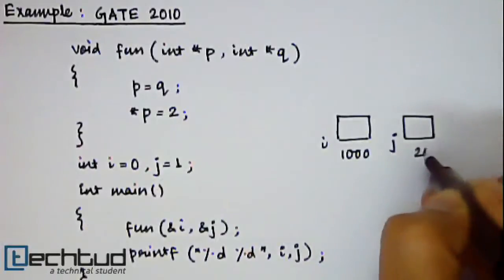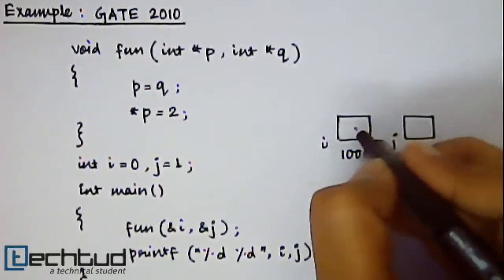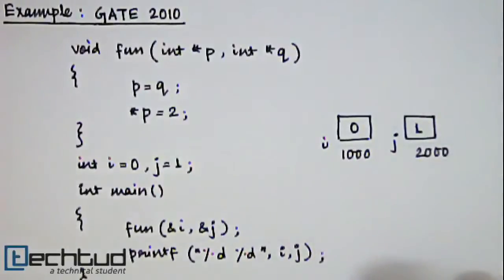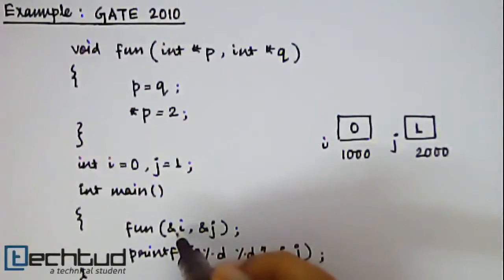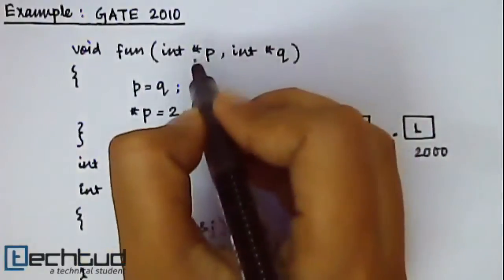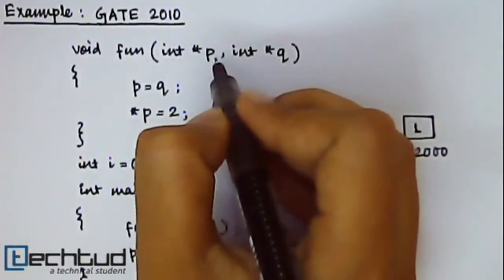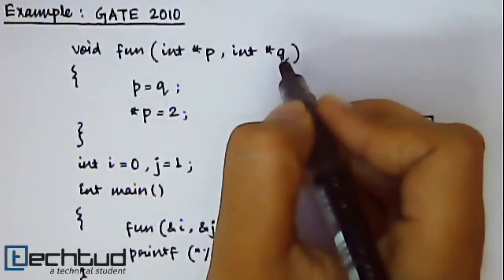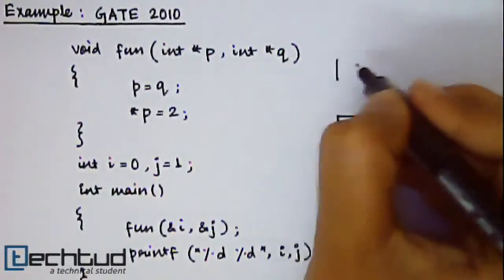Let's say this is i, this is j. Memory locations are 1000 and 2000 and the values stored are 0 and 1. All right. Now you are passing the address of i, that is 1000, and address of j, that is 2000, inside the fun function.